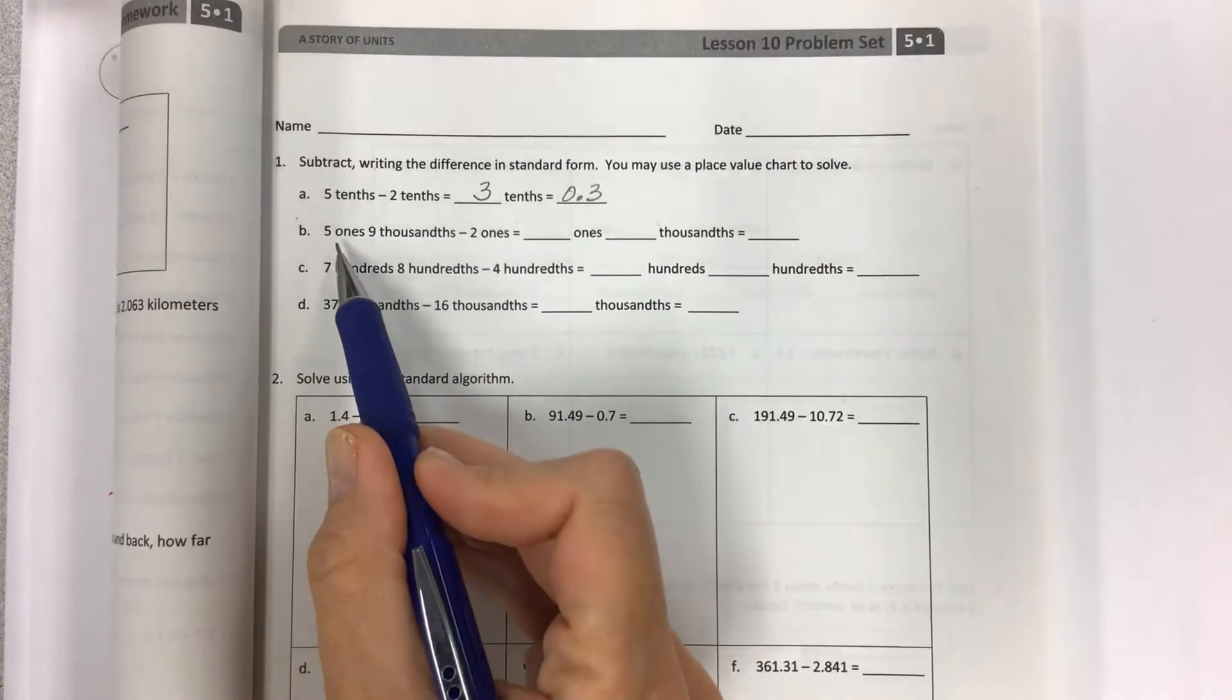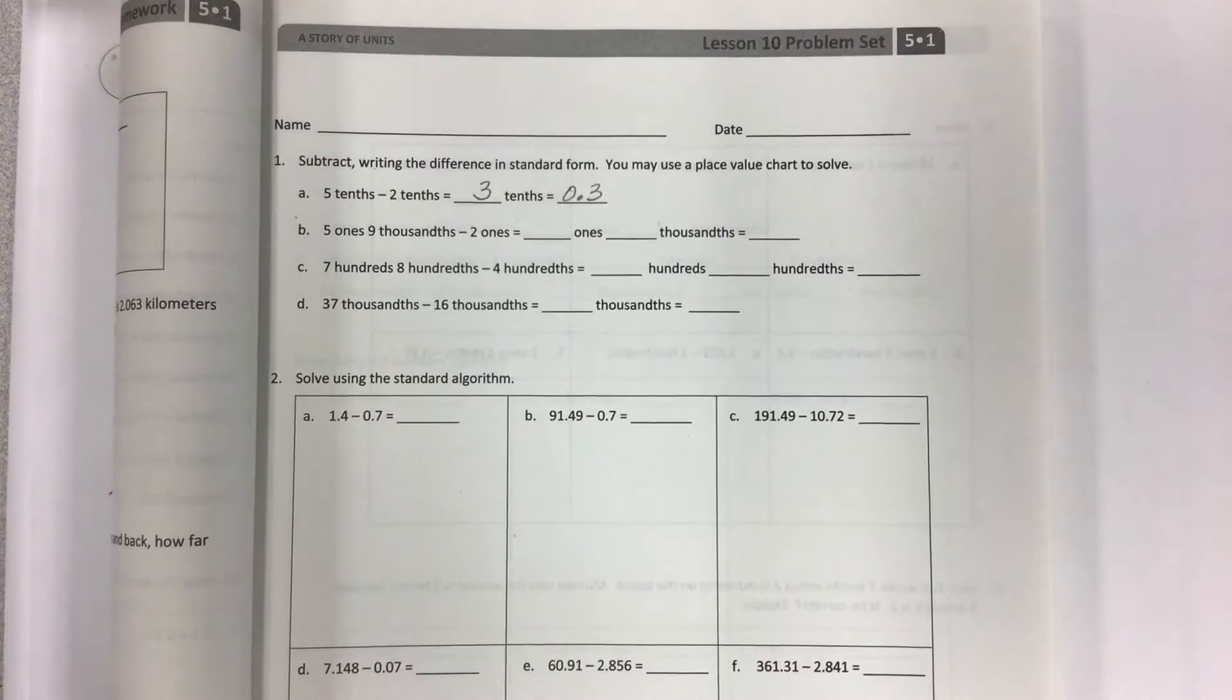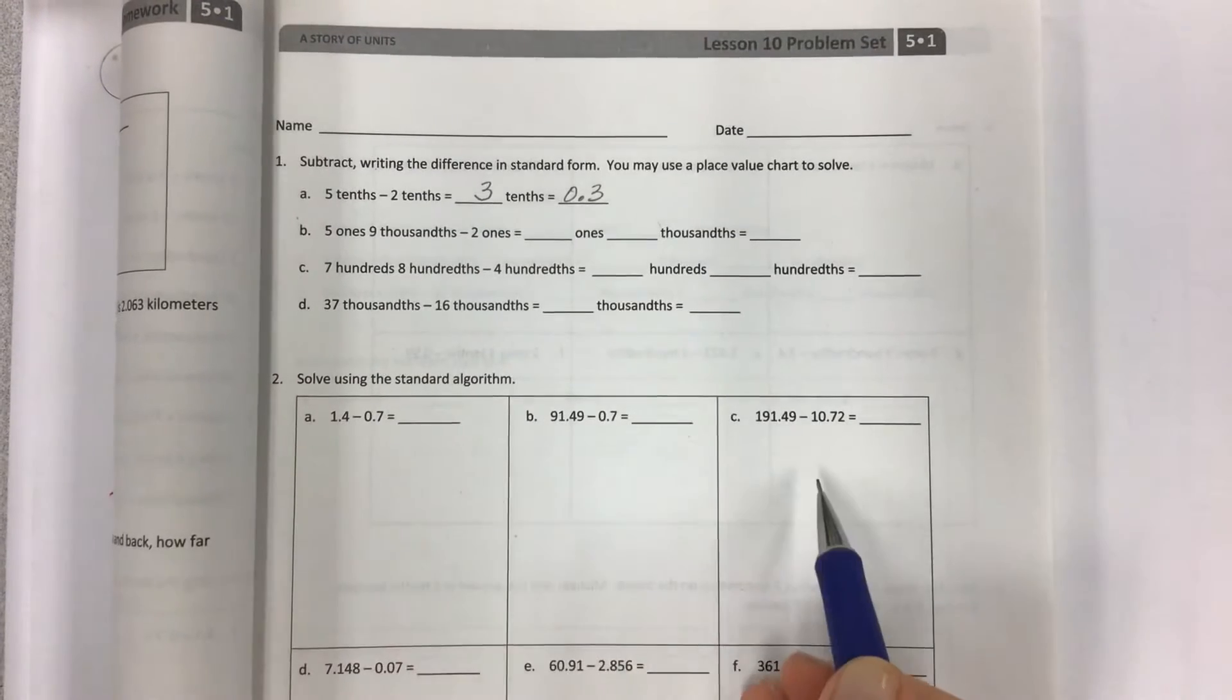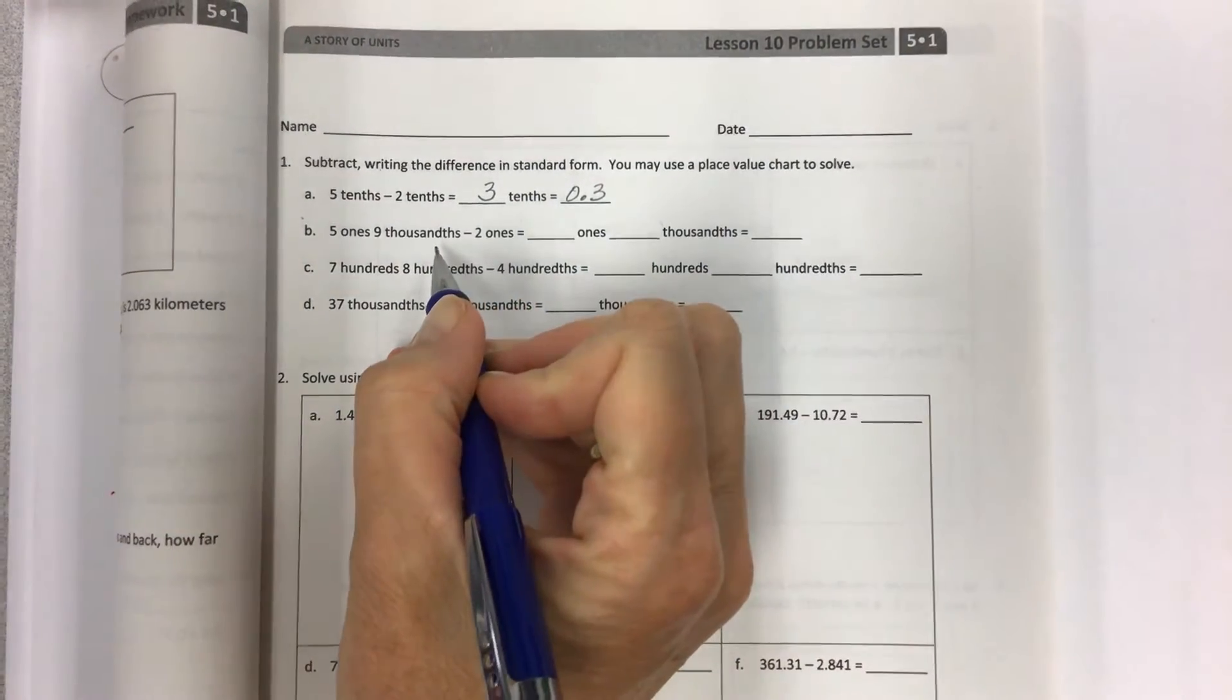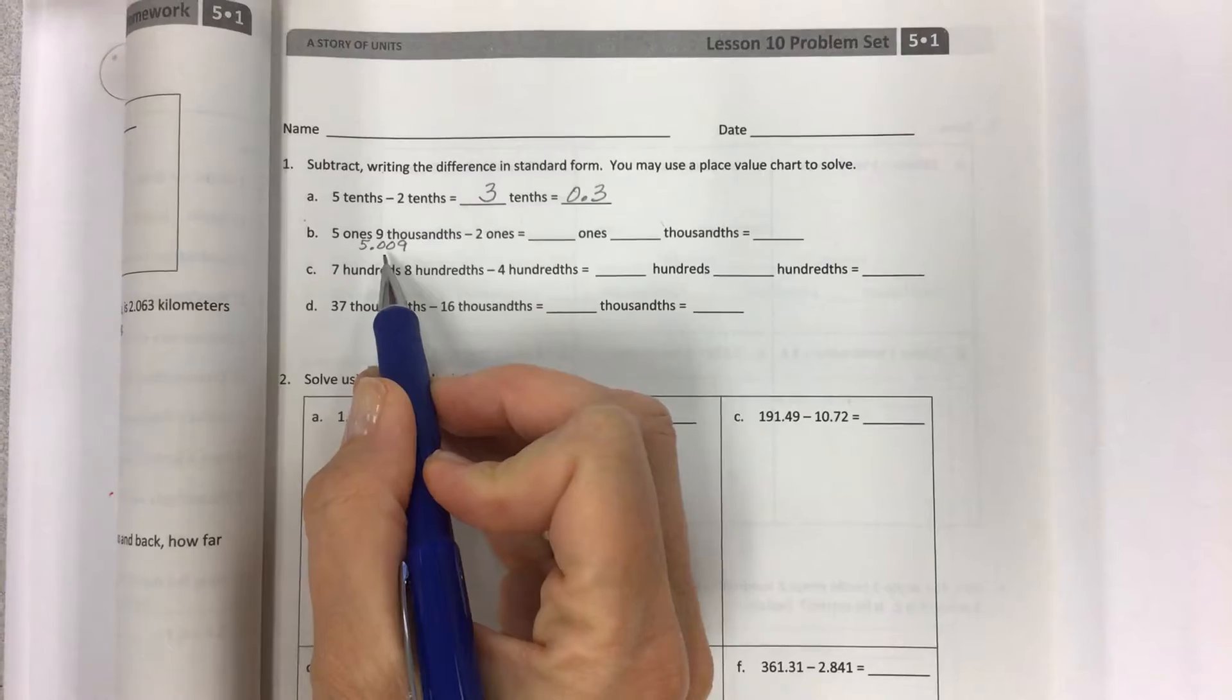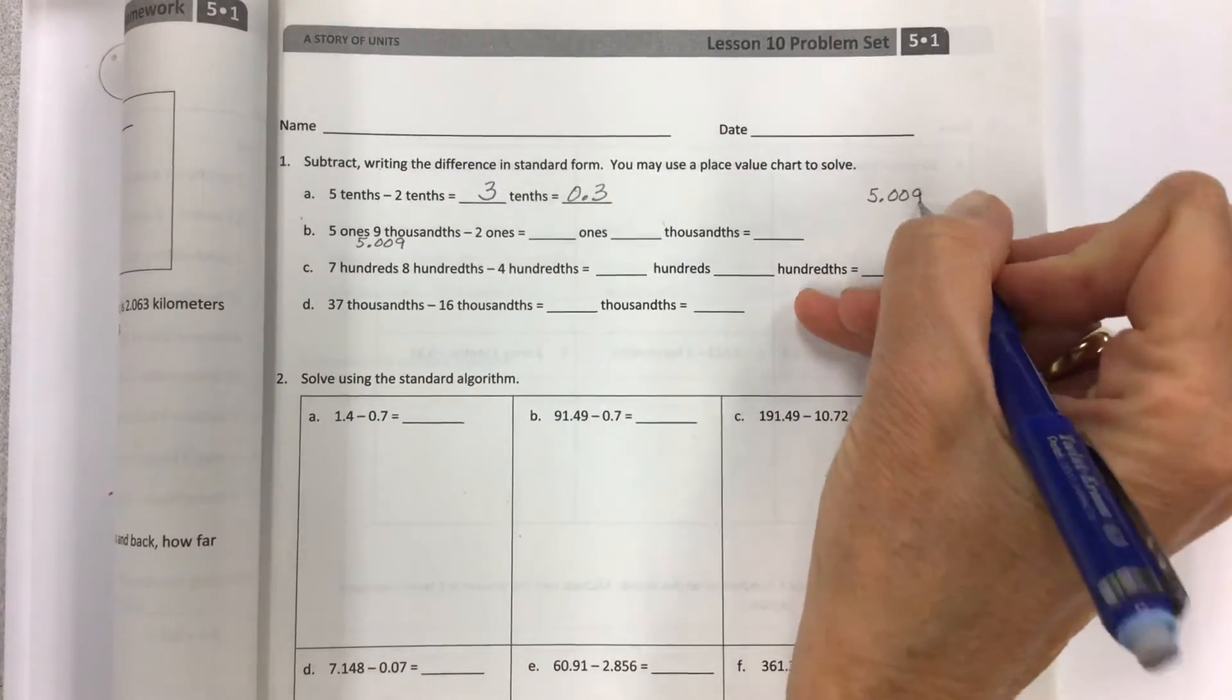Moving on, 5 ones, 9 thousandths, and all the time, when you see something in unit form, we will be preparing to work with the standard algorithm, and it really helps if you write the standard form. You're going to want to set that up so you can do your subtraction.